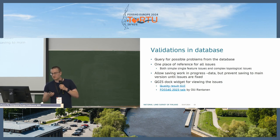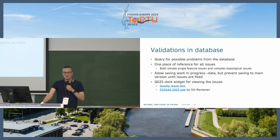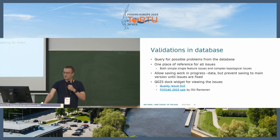This approach allows us to save data that is in progress. For example, if you have some attributes you don't yet know, you can still digitize the feature, save it to the database, and come back to the attribute later in the workflow. We have built a QGIS dock widget tool for viewing these issues. It takes a JSON file that describes the different violations and shows geometry errors. There's also a talk by my colleague Oli Rantane from last year you can check.